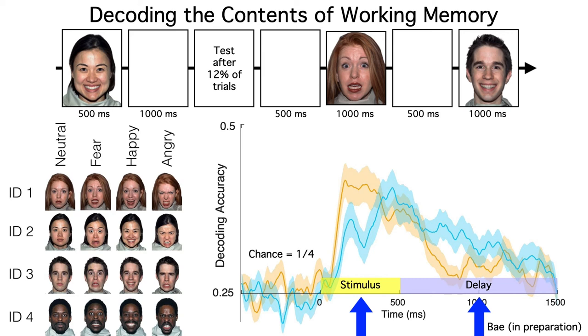Although the decoding was more accurate when the stimulus was visible, information about both identity and expression could be decoded from working memory after the face disappeared. Pretty amazing, huh?